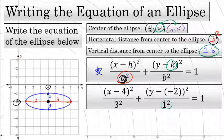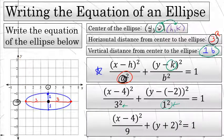We can simplify y minus negative 2 and rewrite that as y plus 2. Three squared is 9 and 1 squared is 1. So to state this equation in simplest form, I'll write (x - 4)² / 9 — the result of 3 squared — plus, instead of y minus negative 2, I wrote (y + 2)². Since 1 squared is just 1, this denominator is 1, so you don't need to write a fraction for that second term at all.